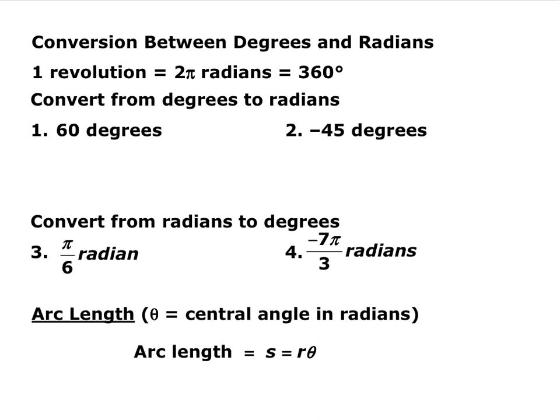Now we introduce a new type of angle measurement: radians. In the past we've always used degrees, but now we have radians. One full revolution is 360 degrees, which equals 2π radians. To convert between radians and degrees, we use unit conversion: 60 degrees times (2π radians / 360 degrees), with degrees canceling, gives π/3 radians.